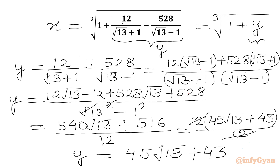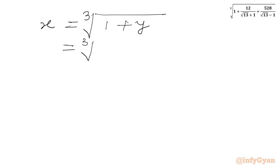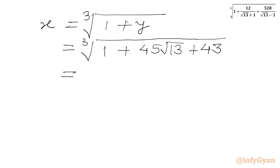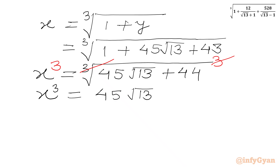Let's replace this value. So we will get x equals cube root of 1 plus y, which equals cube root of 1 plus 45 square root 13 plus 43. Or I can write cube root of 45 square root 13 plus 44. This is equal to x. Now we can consider cubing both sides, putting power 3 on both sides. The cube root and cube cancel, giving x cubed equal to 45 square root 13 plus 44.